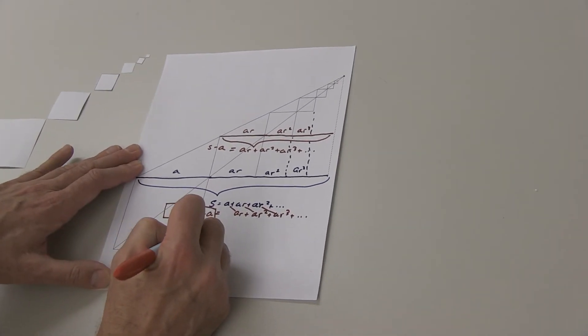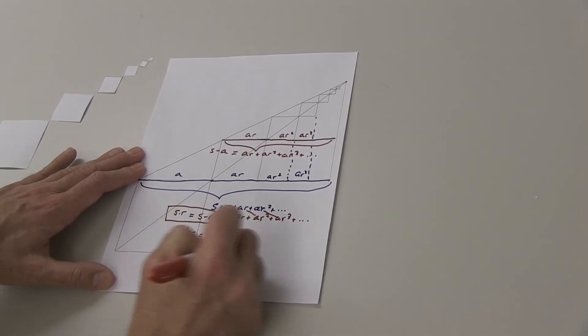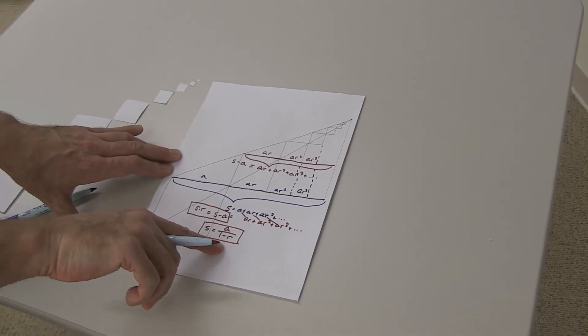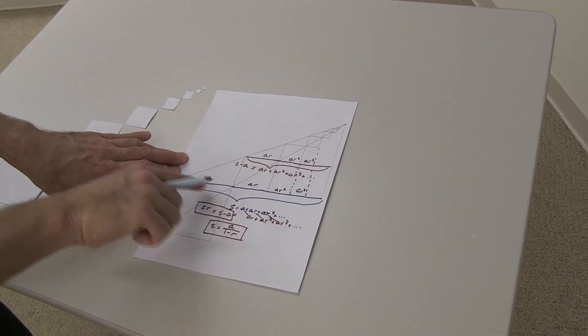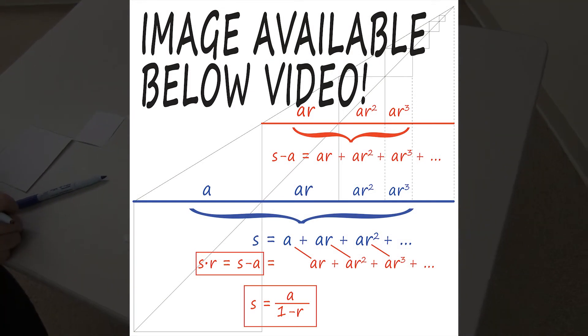You get a solution. S is A divided by 1 minus R. That algebra is an exercise. That is the solution. That is the neat shorthand formula for how to add up an infinite number of terms in a geometric sequence.